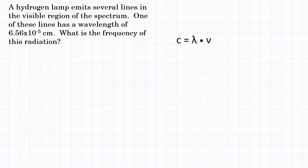The problem states: a hydrogen lamp emits several lines in the visible region of the spectrum. One of these lines has a wavelength of 6.56 times 10 to the negative 5 centimeters. What is the frequency of this radiation?